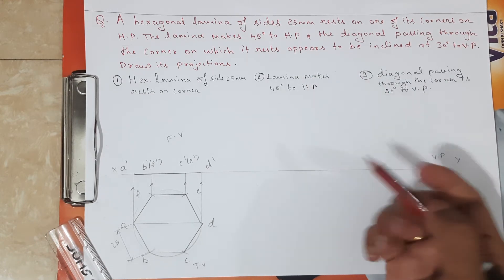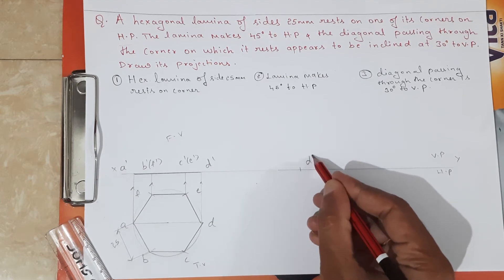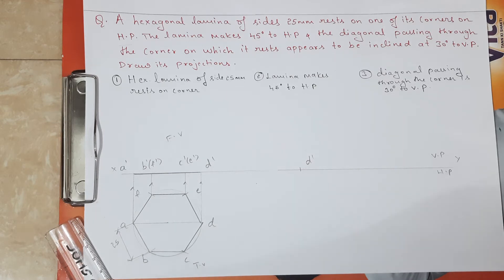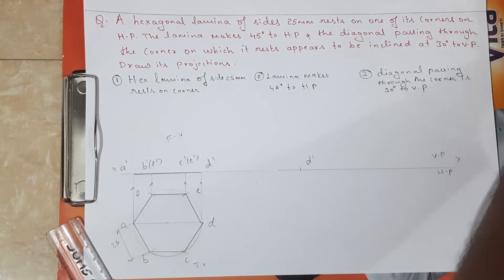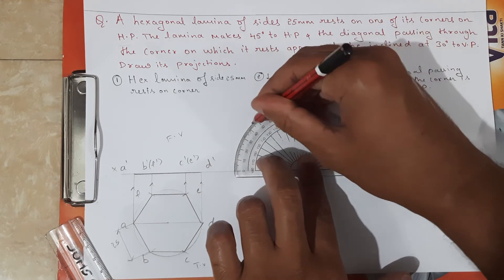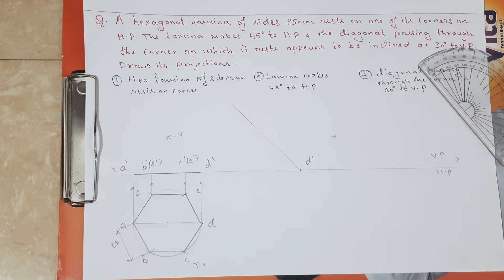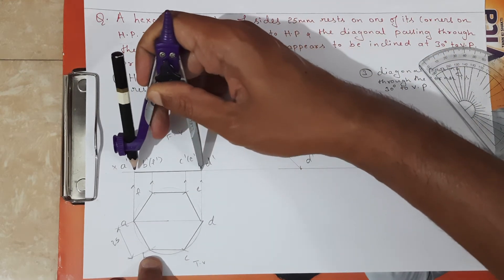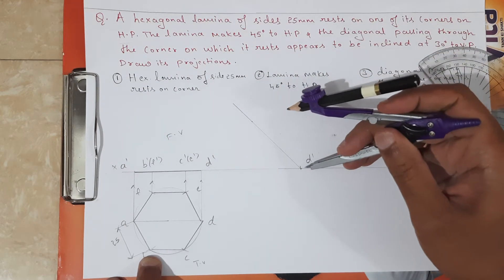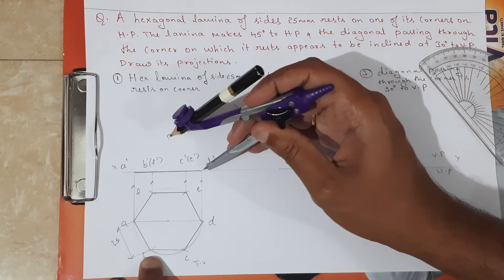Now the lamina makes 45 degrees to HP. The resting corner to the right side is D-dash. With the help of a protractor, with D-dash as center, measure 45 degrees and draw a thin line. Then with the help of compass, take a measurement from D-dash to A-dash and cut the arc — this one is A-dash. Similarly, D-dash to B-dash, cut the arc.